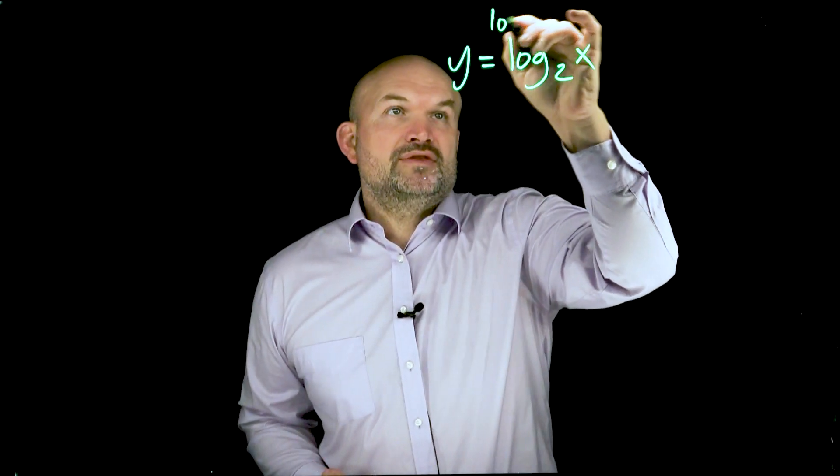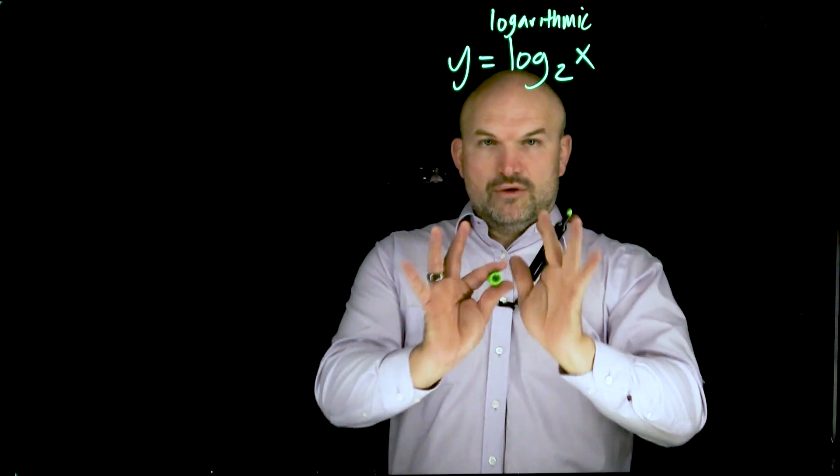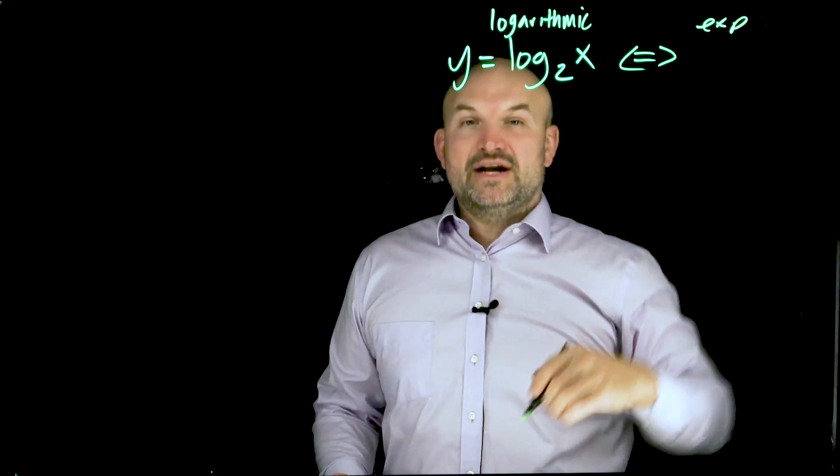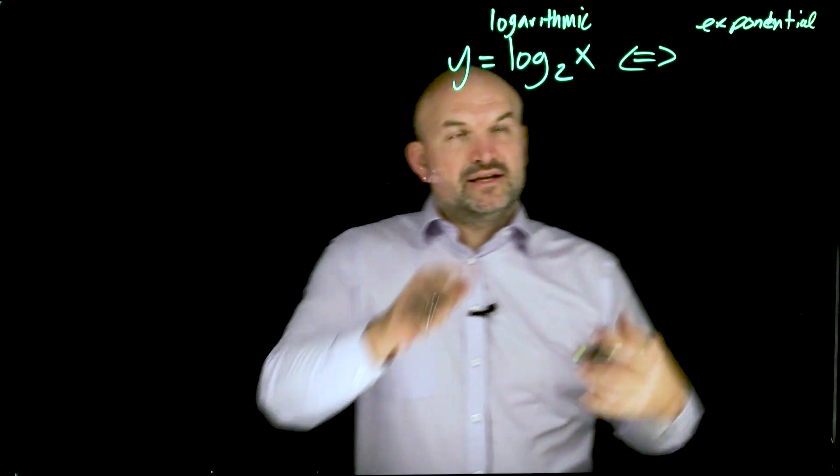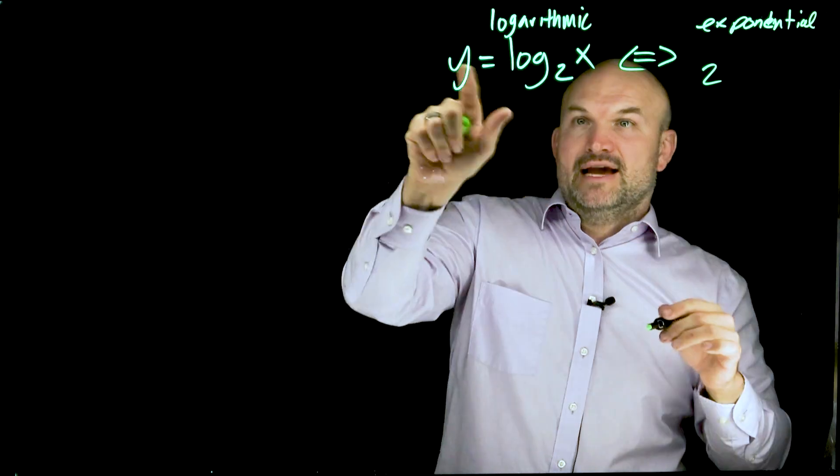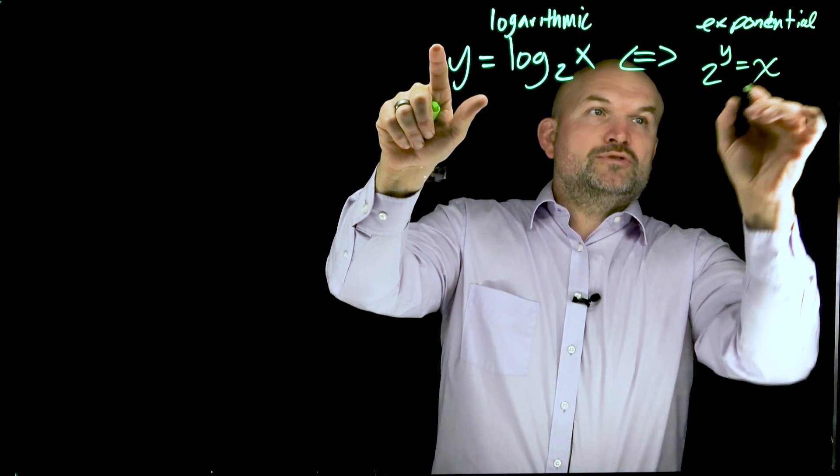This is what we call the logarithmic form, and you can always think about logarithms in terms of their exponential form. To rewrite something in logarithmic form to exponential form, you're going to keep the base the same, and then take your base raised to what it's equal to, so 2 to the y equals x.